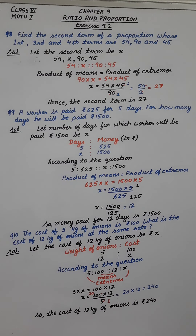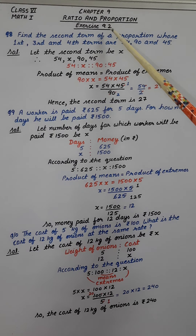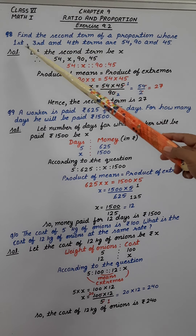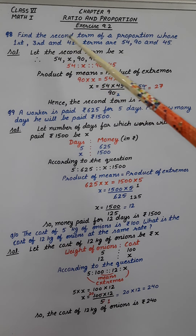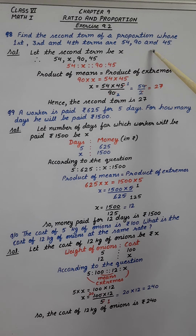Good morning children. Let's continue with exercise 9.2, question number 8. Find the second term of a proportion whose first, third and fourth terms are 54, 90 and 45.